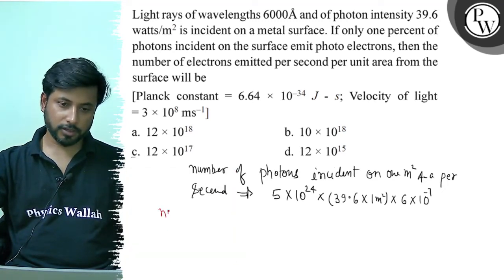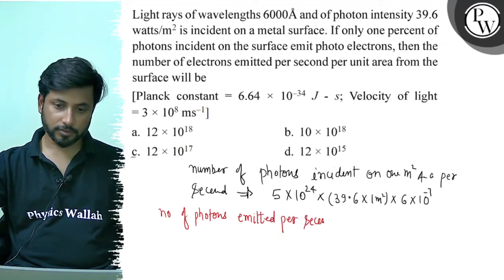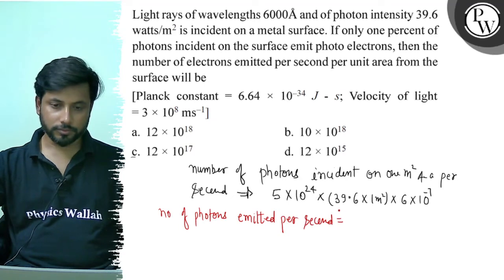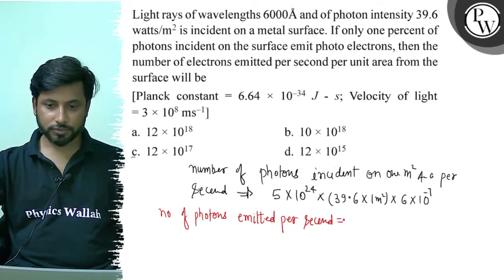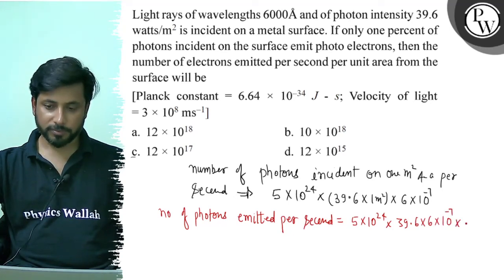Here we get the number of photons emitted per second equals to 1 percent. So this is 5 into 10 to the power 24 into 39.6 into 6 into 10 to the power minus 7, and this is 1 percent, that is 1 by 10 to the power 2.